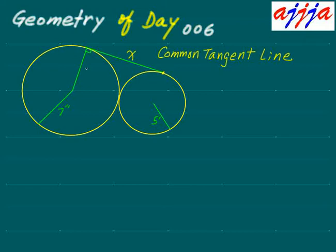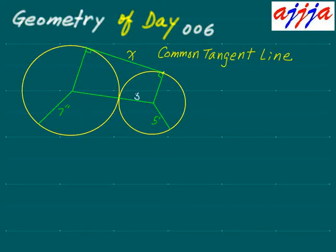This radius and the tangent line form a 90-degree angle. This one is also 90 degrees. Then one more line — what is the center-to-center distance? This one is five and this one is seven, so together that's 12 inches.